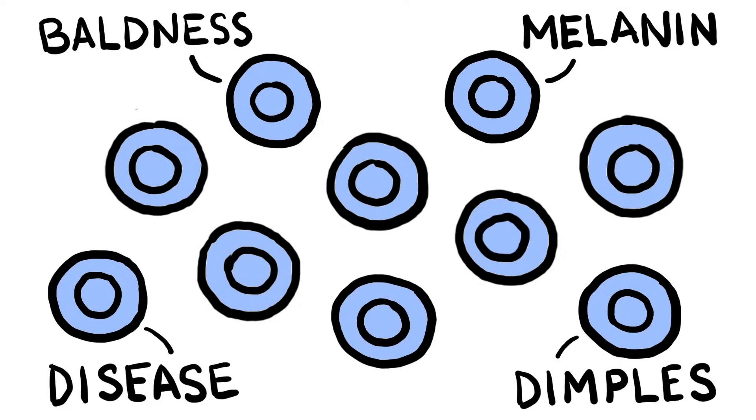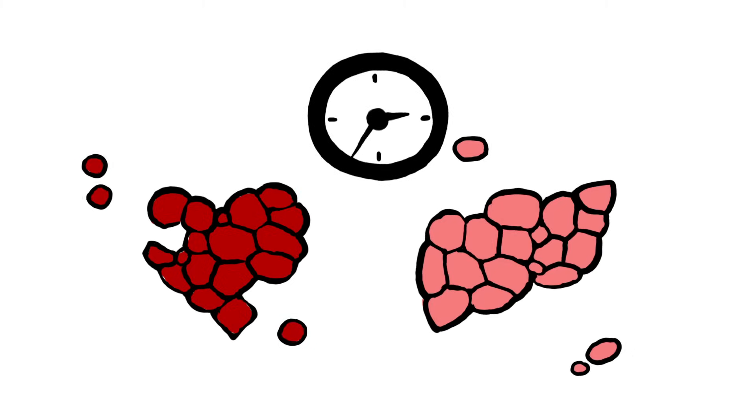The cells in an embryo start with one master genome. As the cells divide, some genes are activated and others inhibited. Over time, through this epigenetic reprogramming, some cells develop into heart cells and others into liver cells.